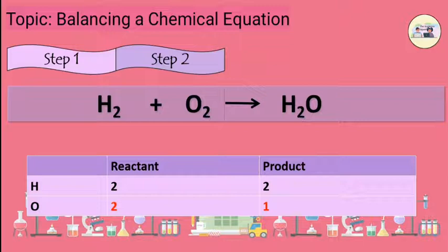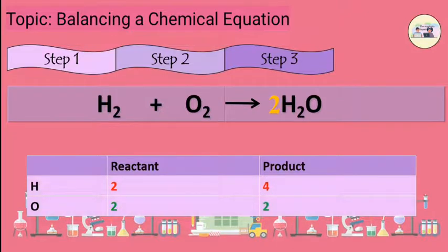Step 3: In order to balance oxygen compound, we apply a factor of 2 to the product. So, H2 plus O2 gives 2H2O. Now, oxygen compound is balanced but hydrogen compound is unequal on both the sides.